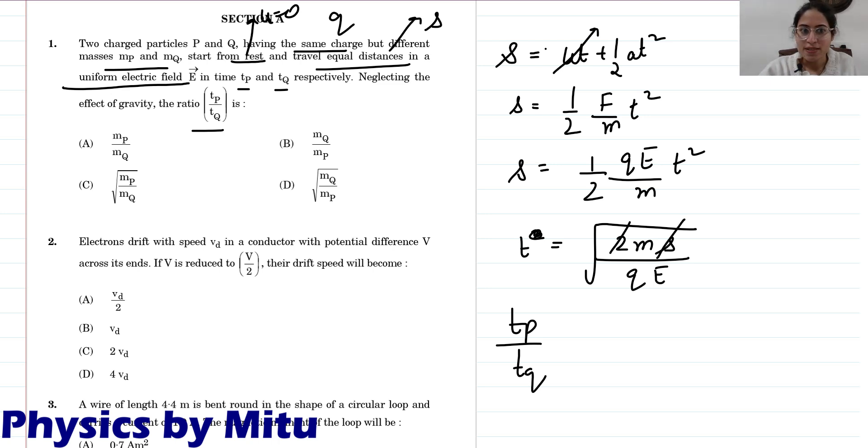Both have same distance, same charge, same electric field. So it is root mp upon root mq. Answer is D.